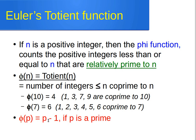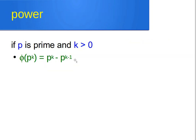Another property: if p is a prime number and k is a positive integer greater than zero, then phi(p^k) = p^k − p^(k−1). For example, if p = 13 and k = 10, then phi(13^10) = 13^10 − 13^9.